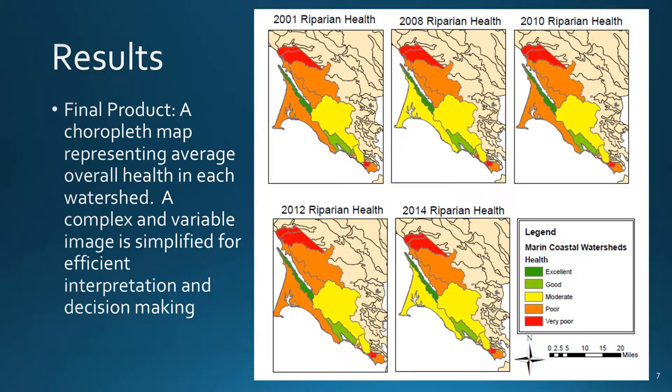We found that riparian health, measured according to our methods, varied widely throughout the 22 watersheds within our study area. The watersheds along the western banks of Tomales Bay were consistently in excellent condition throughout the time frame of this study. The coastal watersheds of northern Marin County and some in the southern reaches of the study area were consistently in very poor condition, making them potential candidates for restoration projects. We noticed that in many of the watersheds, overall health did not significantly change over the time frame of the study. The Point Reyes watershed, which shifted back and forth between poor and moderate condition, represented one notable exception.